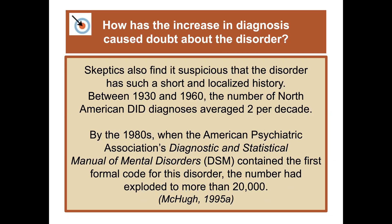Skeptics also find it suspicious that the disorder has such a short and localized history. Beginning in 1930 into about 1960, the number of North American dissociative identity disorder diagnoses averaged about two per decade. But then in the 1980s, when the DSM contained the first formal code for the disorder, the number exploded to more than 20,000 — making people wonder if this was a real disorder or if the prevalence was way out of line.